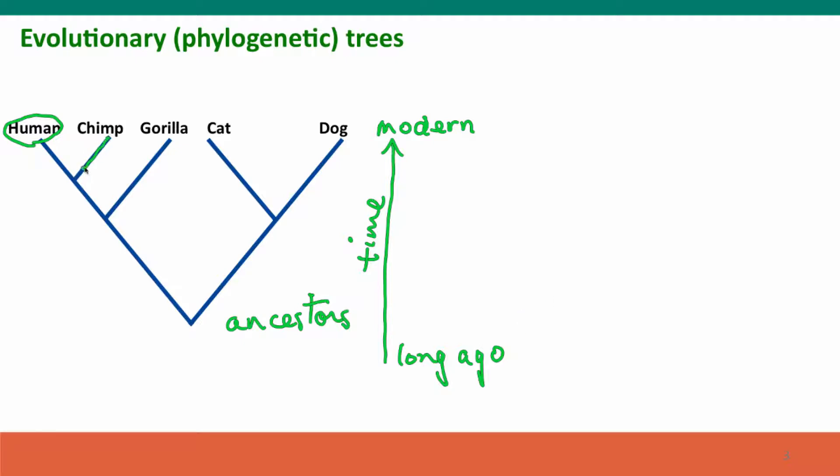The places where the branches come together represent the common ancestors of the organisms. So this node, we call it, represents the point at which there was one lineage that was the ancestors of both humans and chimps. And at this point in time, so we can think of that as a time, at this time there was what we call a speciation event. And this group of organisms became two different species that evolved independently along the different lineages. Here's the common ancestor of the larger group that also was the ancestor of gorillas. And then farther back, we have the common ancestor of all of the mammals, including cats and dogs.